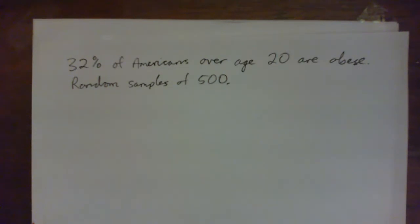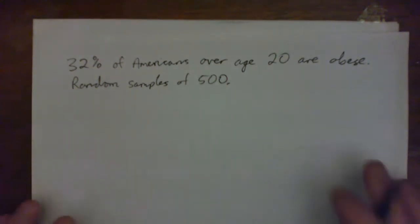Right, so we've got 32% of Americans over age 20 are obese. We're going to look at random samples of 500. And if we looked at these random samples of 500 and recorded percent of people in the sample who are obese, we expect to get data that are approximately normally distributed.